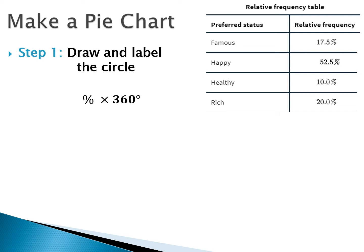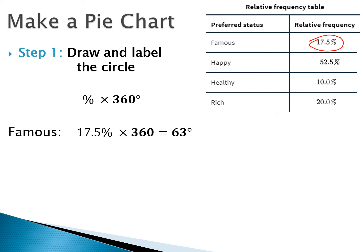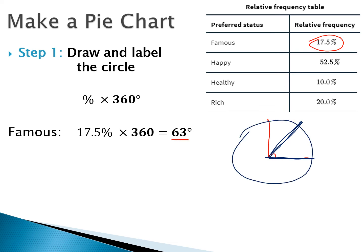We're going to take the percent and multiply it by 360 degrees. So we'll start with that 'famous' category at 17.5%. Multiply that by 360, and we can see that's going to take up 63 degrees. Hopefully that gives you an idea of what part of the pie that would look like — it doesn't have to be exact. A 90-degree angle is a right angle, and 63 degrees is about two-thirds of that.